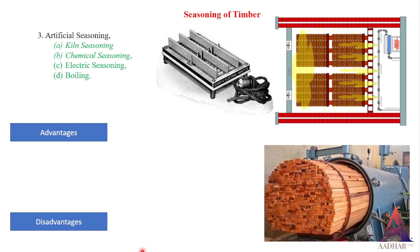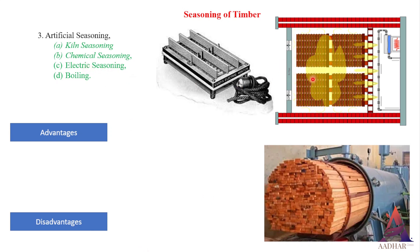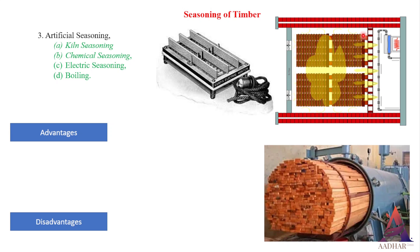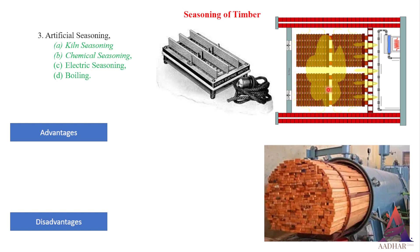Kiln seasoning. In this method, timber is subjected to hot air in an airtight chamber. The hot air circulates between the timber logs and reduces the moisture content. The temperature inside the chamber is raised with the help of heating coils. When the required temperature is obtained, moisture content and relative humidity get reduced and timber gets seasoned. Even though it is costly to process, it will give good results strength-wise.